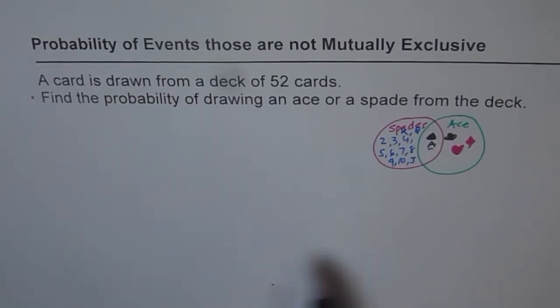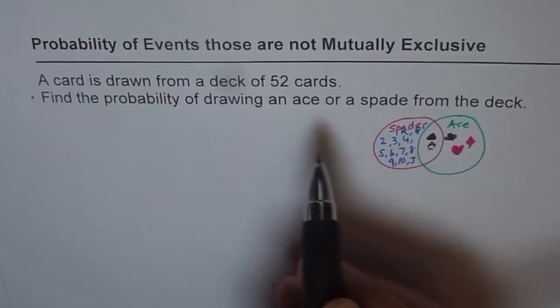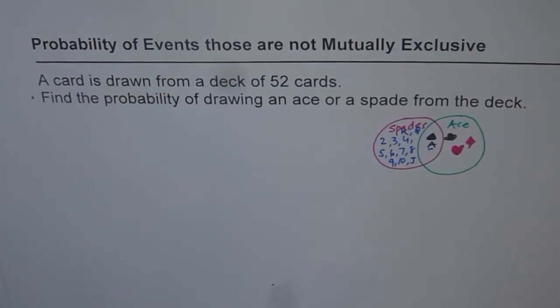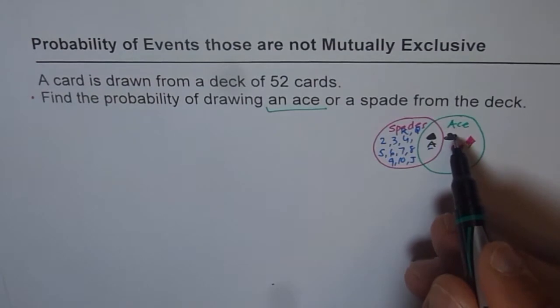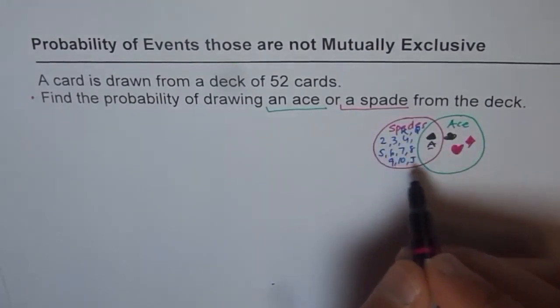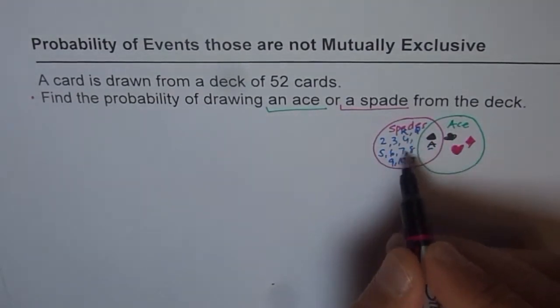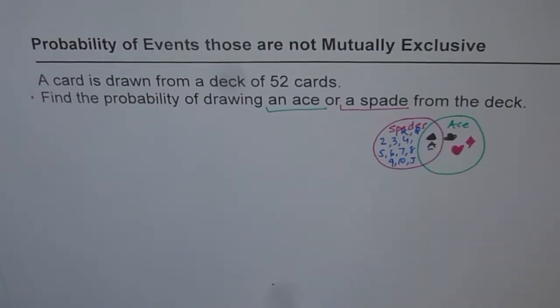So when we say what is the probability of drawing an ace or a spade? What is the probability of drawing an ace? So there are 4 aces. So that would be 4 over 52 or a spade. In the spades, what is the probability, 13 over 52. But in both the cases, we counted ace of spades twice, do you see that? So we should reduce that or we should subtract that probability of finding ace of spades. To get the real probability.